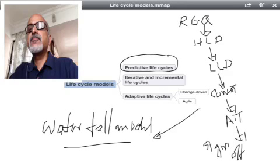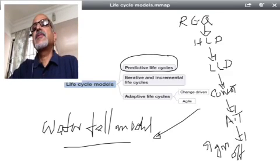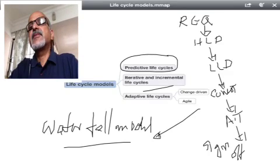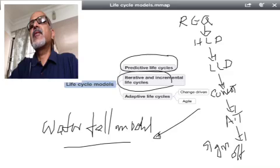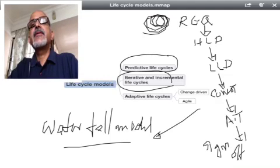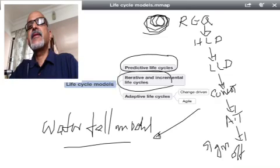Then comes the iterative and incremental styles where requirement itself can be repeated multiple times. Iteration 1, iteration 2, iteration 3 because after iteration 1, customer will have more clarity and then he or she may give more requirements or more clarity into the requirements.